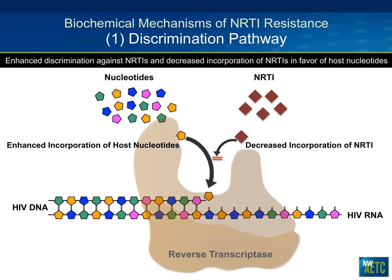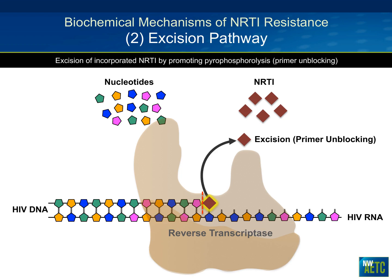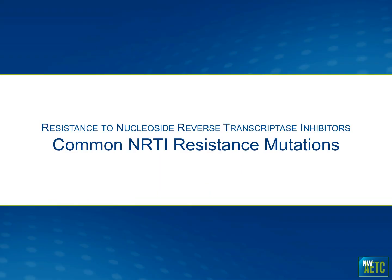Visually, the discrimination pathway shows the virus favoring human nucleotides over the NRTI — it's a race to the elongating primer strand, and the innate human nucleotides win. The excision pathway is the opposite: the NRTI has already bonded to the primer, but the virus uses a phosphorylidic reaction to excise and remove it, allowing the reverse transcriptase process to continue.